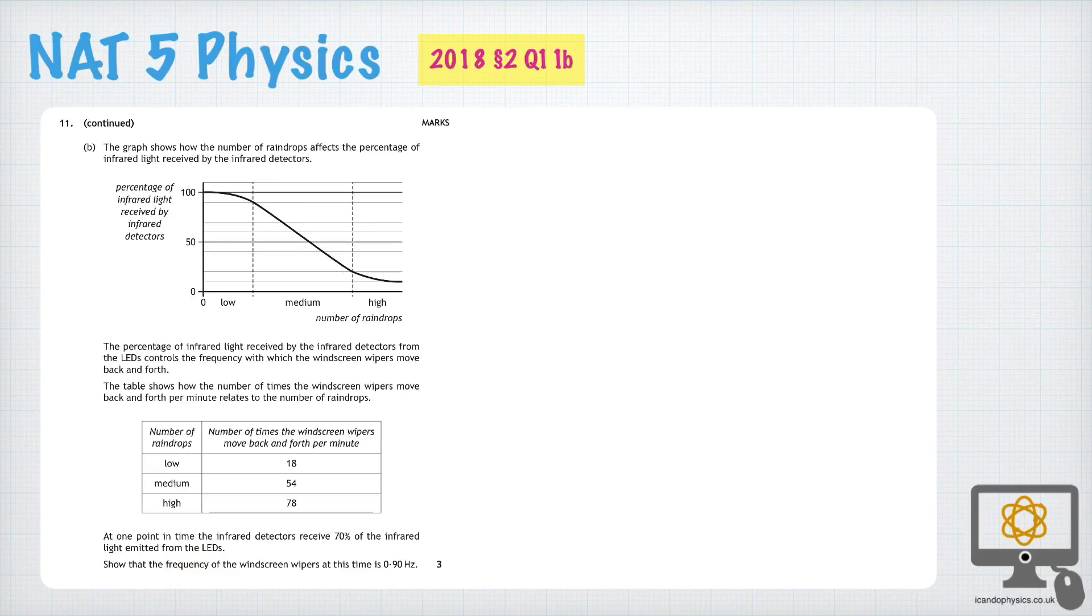So let's first of all look at 70%. 70% is here, and that means that the number of raindrops is the medium amount. And a medium amount of raindrops means that the wipers will move 54 times in a minute. So let's write that down. The number of movements is 54 in one minute.